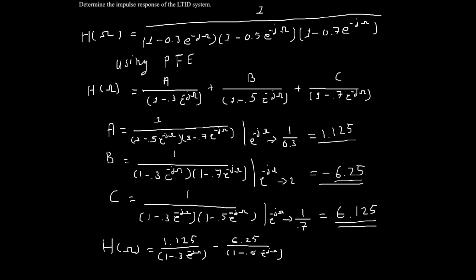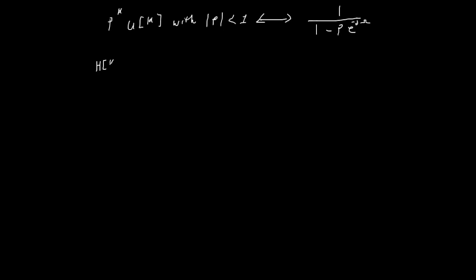With H of omega rewritten as a sum of fractions, we may now utilize the following transform which yields the discrete time domain impulse response of the system.